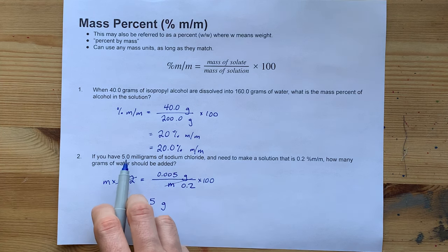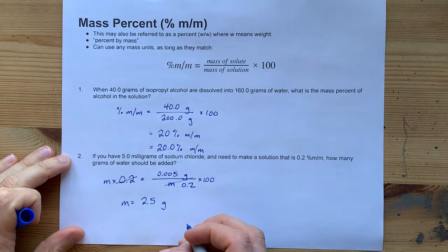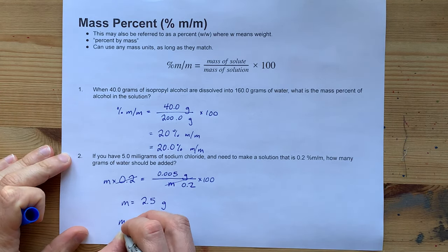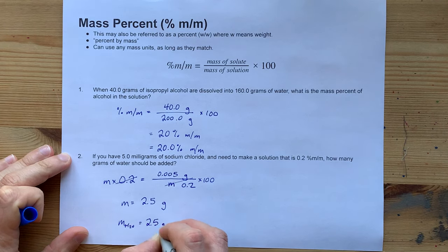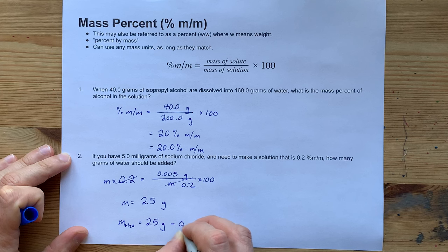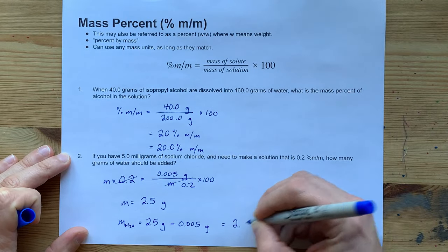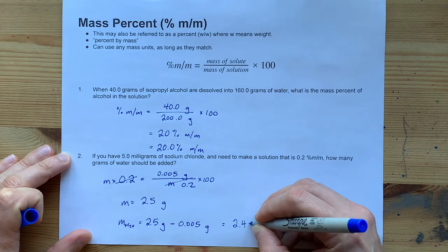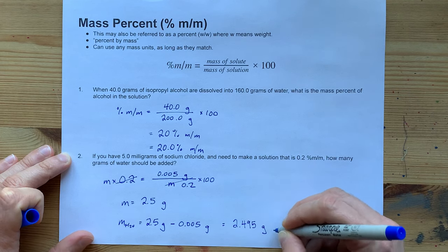keeping in mind that I already started with 5 milligrams of sodium chloride. So the official answer here is that the mass of water that you need is the mass of the solution minus the mass already accounted for by your solute. This ends up giving you still about 2.5 grams, but it's actually 2.495 grams of water.